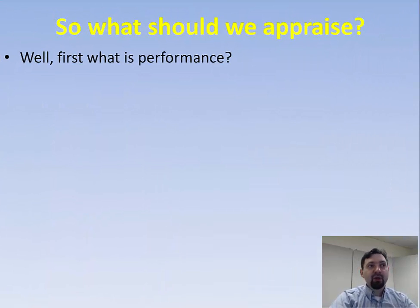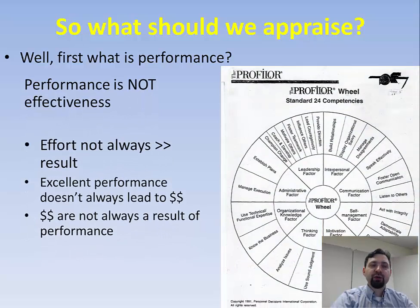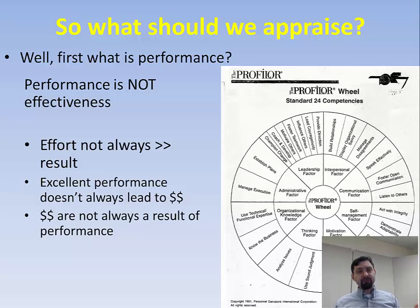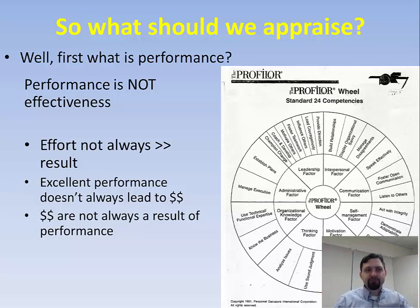Question number one: what should we appraise? Before we even talk about that, we should discuss what constitutes performance — it's not a simple question. Here on the slide you see a so-called performance wheel, which lists 24 competencies related to general employee performance. Not only are there many of these — and most would agree that they're important — but different people would have different opinions as to which should be used at all and how the ones that are used should be weighted.